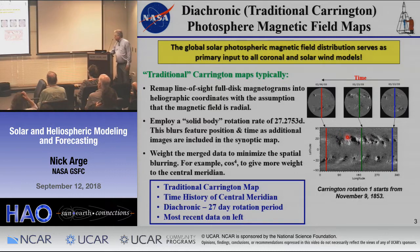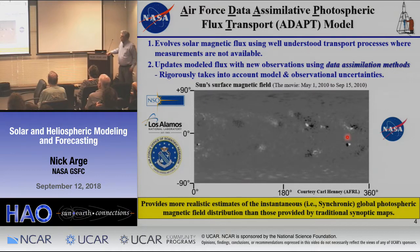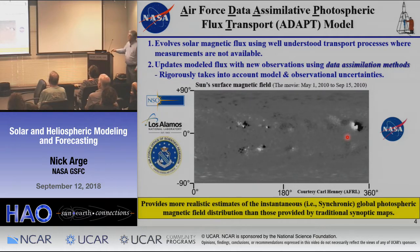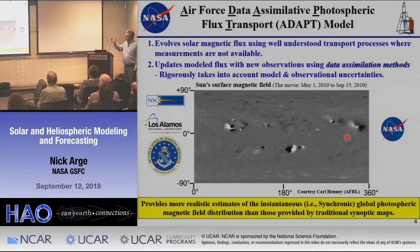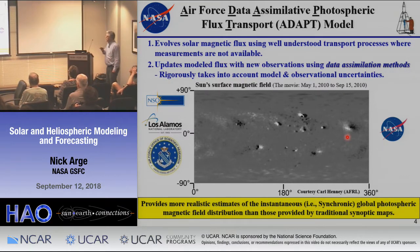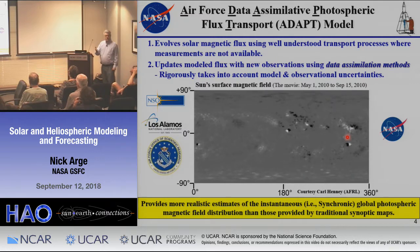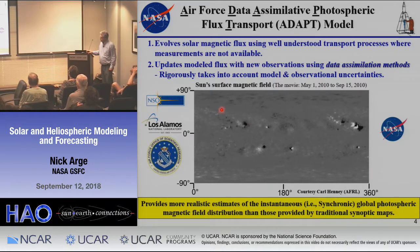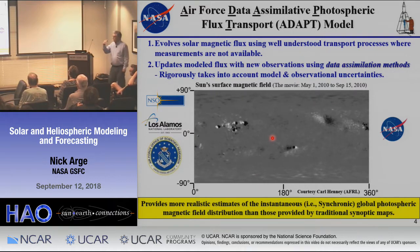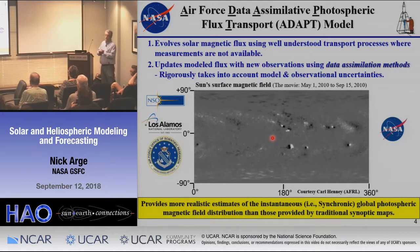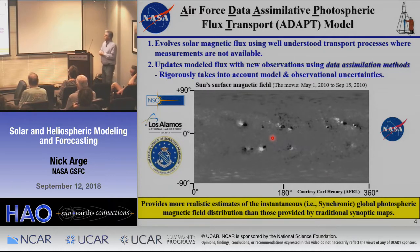This was the motivation for developing the ADAPT model. The goal is to create synchronic or instantaneous maps — take observations when you have them, but also evolve the flux using well-known processes that happen on the sun, like differential rotation, and then rigorously assimilate real data as you get new observations. This five-month movie of the sun shows this data assimilation window as you're assimilating.